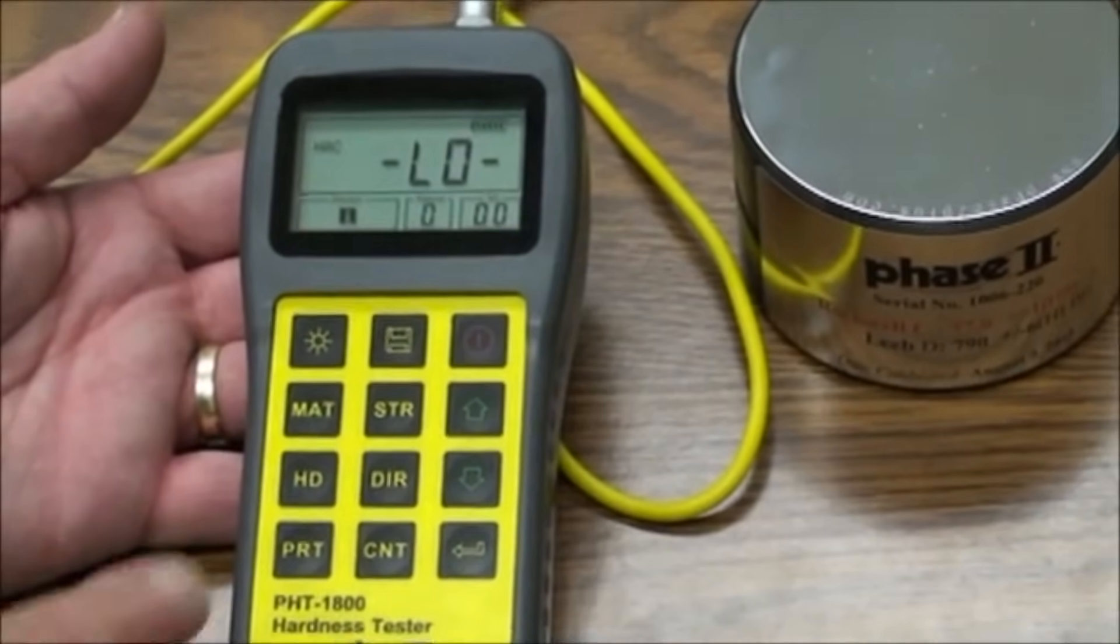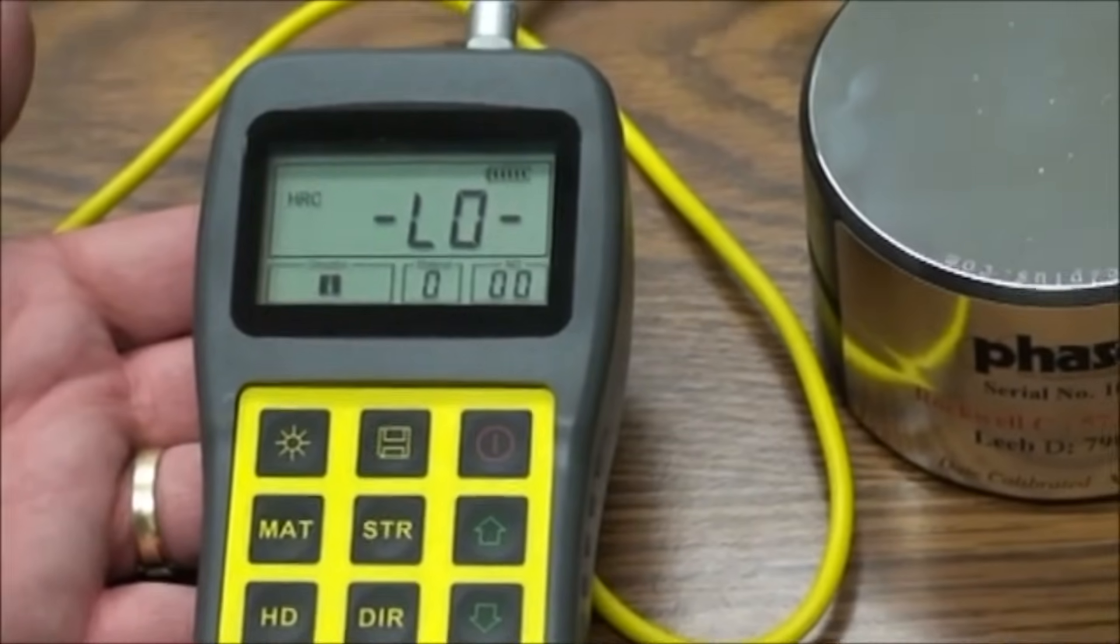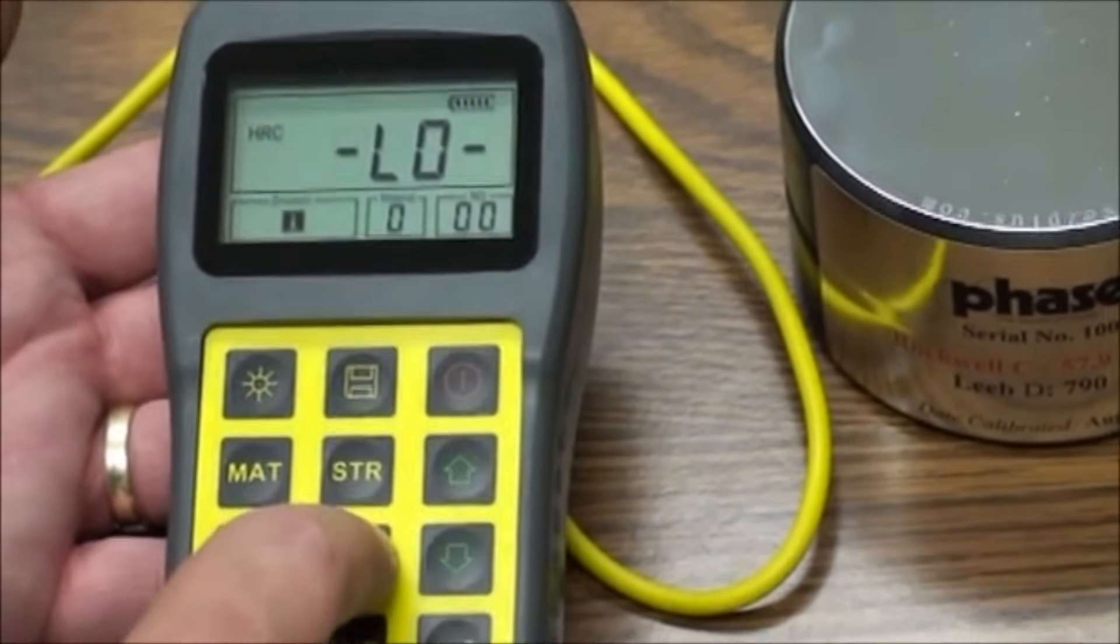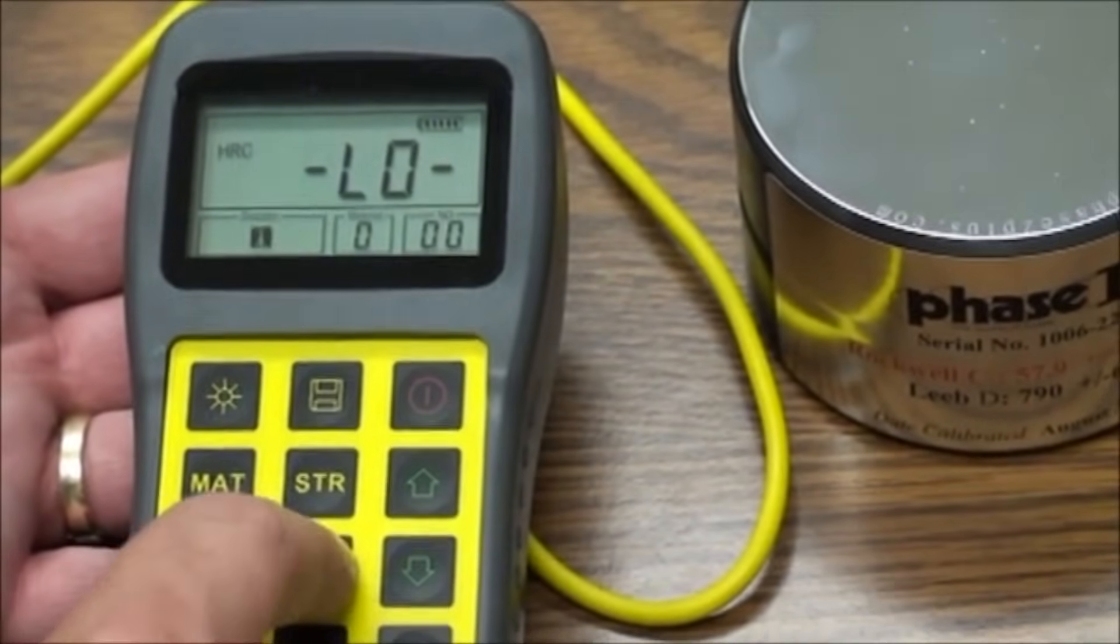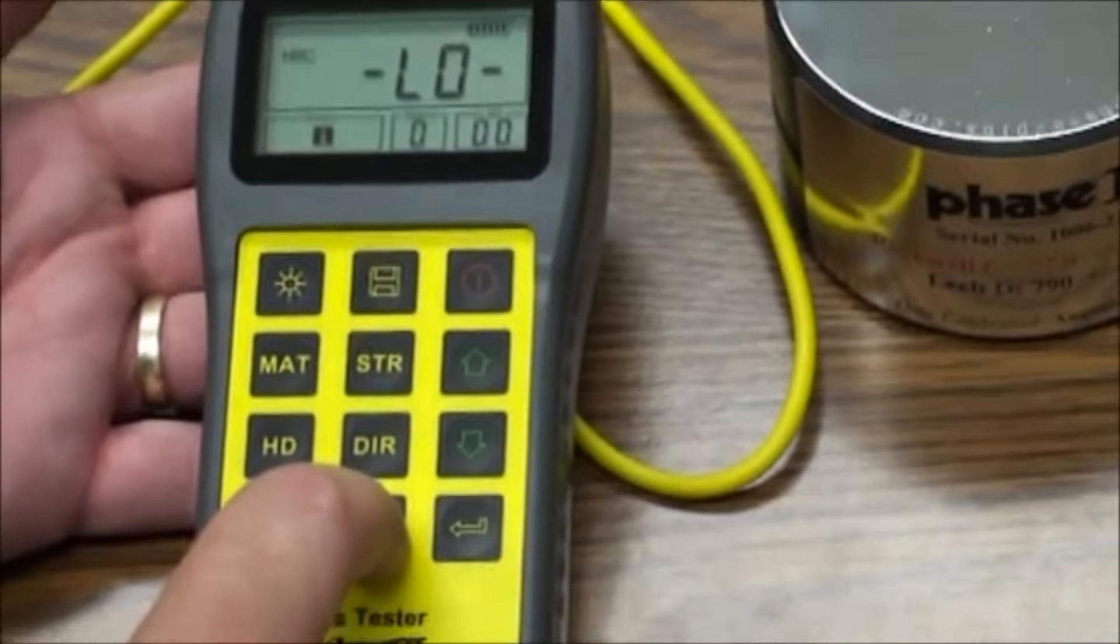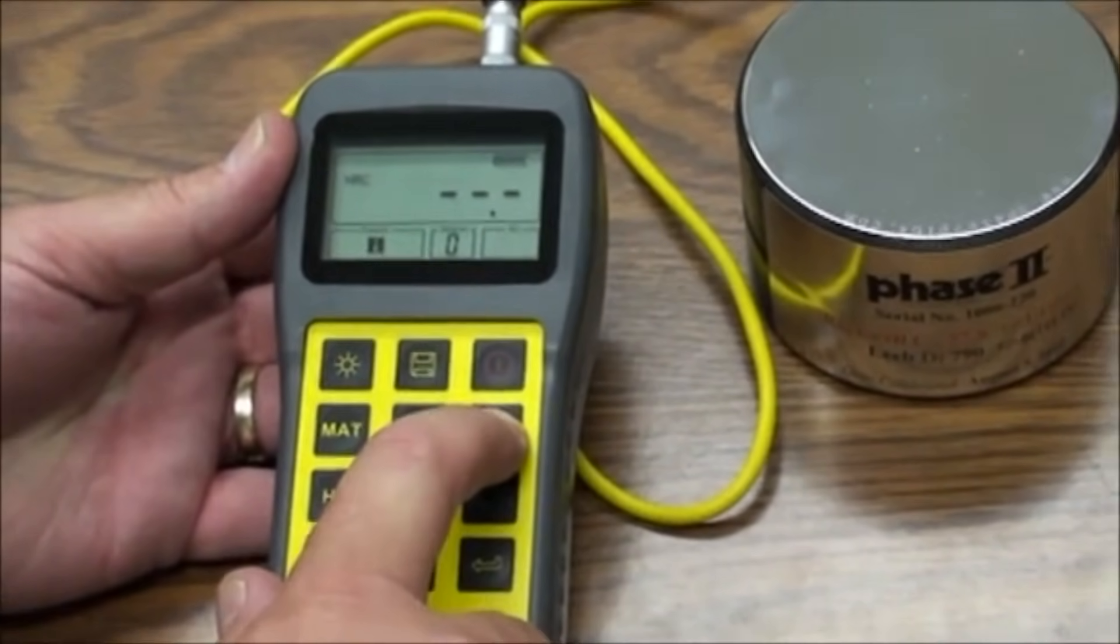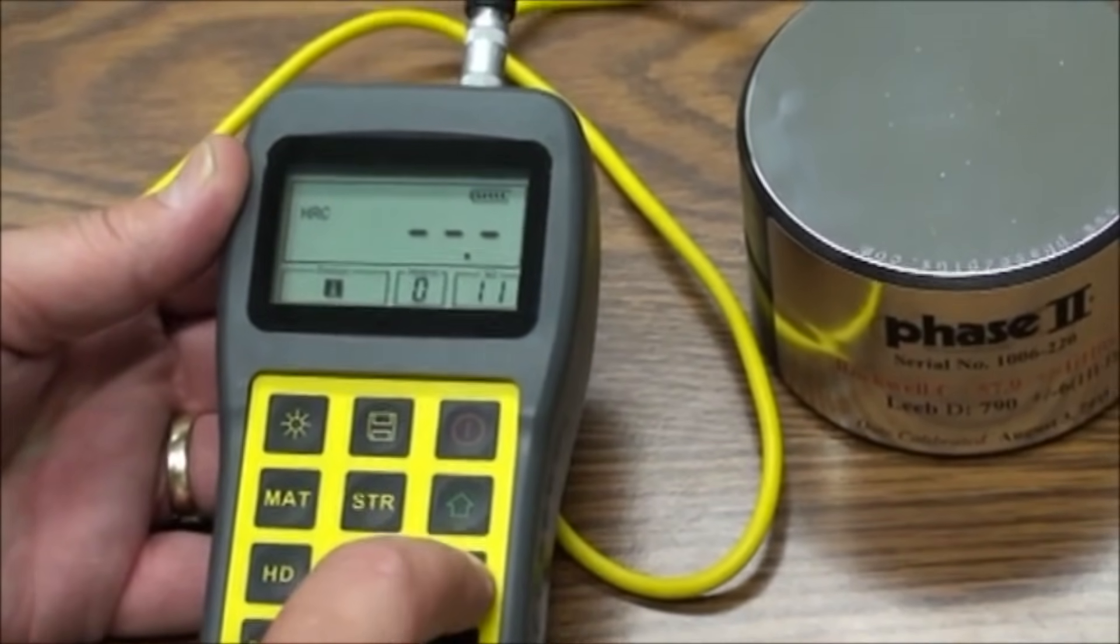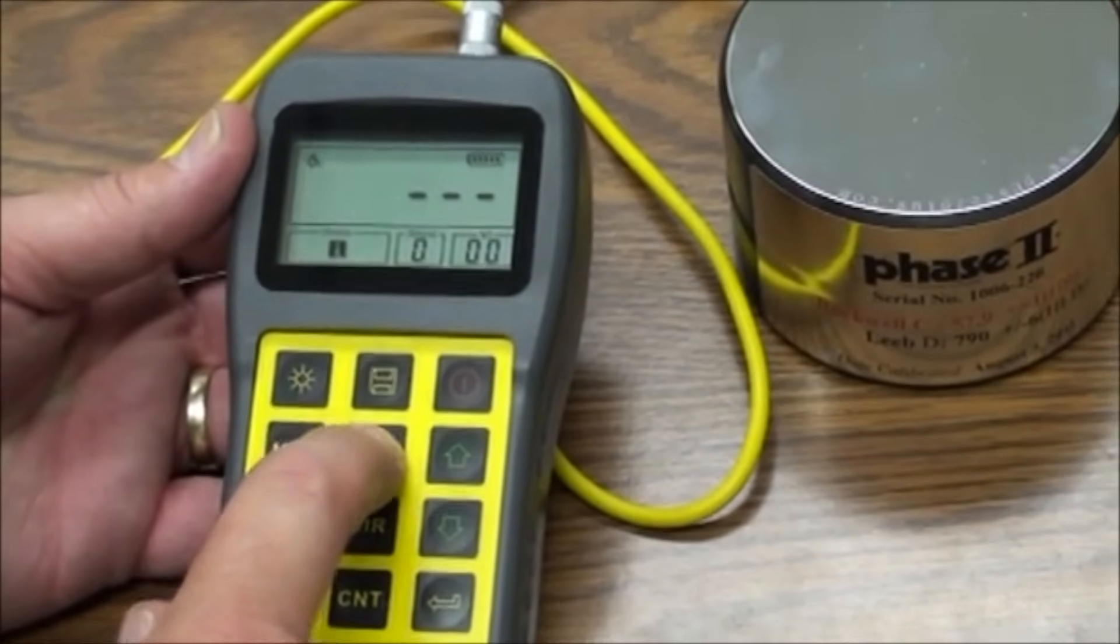The backlight key is easy to turn on and off. The DIR key is used to change the direction of the test probe during your test. The count button will allow you to preset how many tests will be taken before an average is computed.